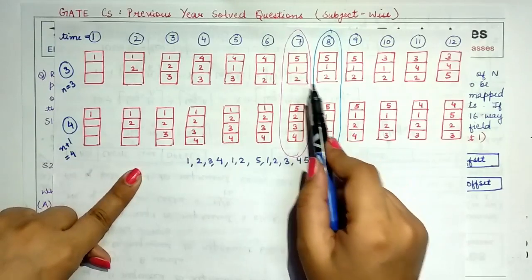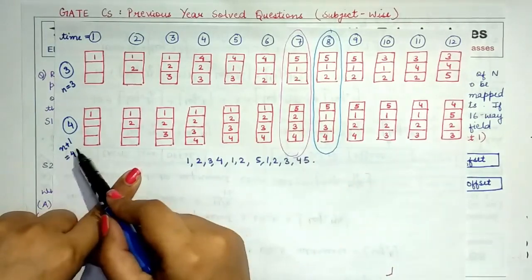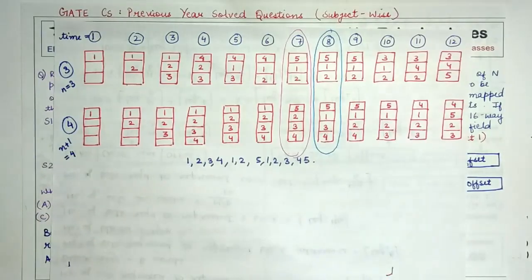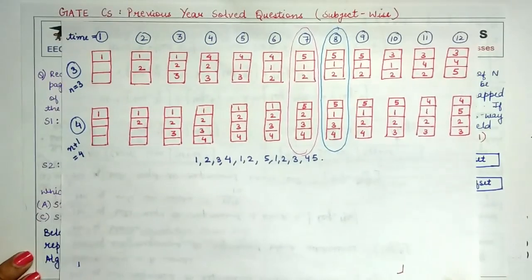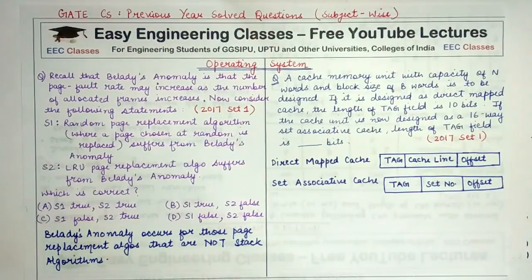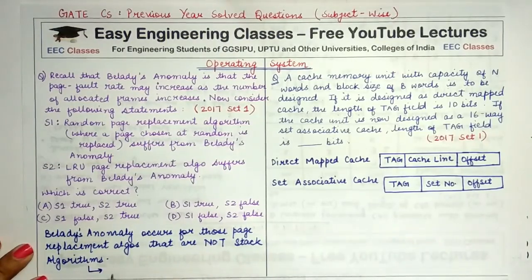But at time equal to seven and eight, the pages in three frames — {5,1,2} — are not a subset of the pages present in four frames. If at any point the pages in n frames are not present in n+1 frames, even a single one missing, then it is not a stack algorithm and it may suffer from Belady's Anomaly.